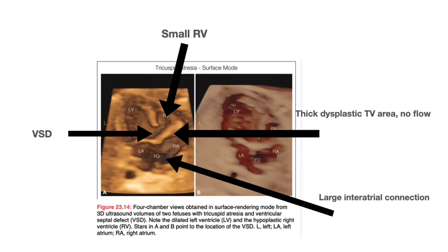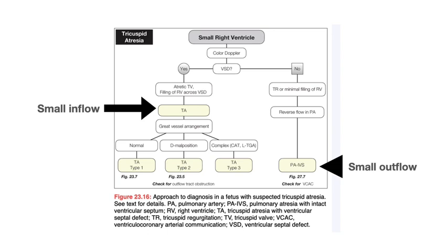Here's a 3D picture of tricuspid atresia. You can see a tiny right ventricle and a thick, dysplastic tricuspid valve with no flow in it. Since all the blood has to go from the right atrium to the left atrium, the foramen ovale is very large, with a large interatrial connection. There is also a VSD. For a small right ventricle: first, is there a VSD at all? If there is no VSD, you have eliminated tricuspid atresia because it always comes with a VSD.